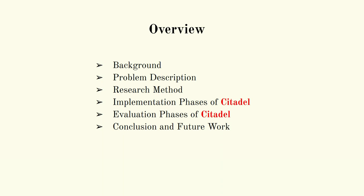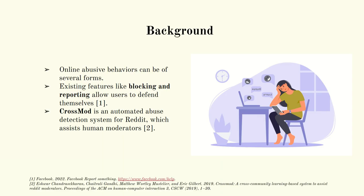Then we will discuss the conclusion and future work. Online abusive behaviors can be of different forms, like harassment, threats, etc. Existing features like blocking and reporting allow users to defend themselves, but they do not offer users the ability to prevent abusive behaviors. In a previous study, CrossMod was proposed, an automated abuse detection system for Reddit which assists human moderators, but there is a gap between the perception of abuse among human moderators and victims due to social context and language barriers.